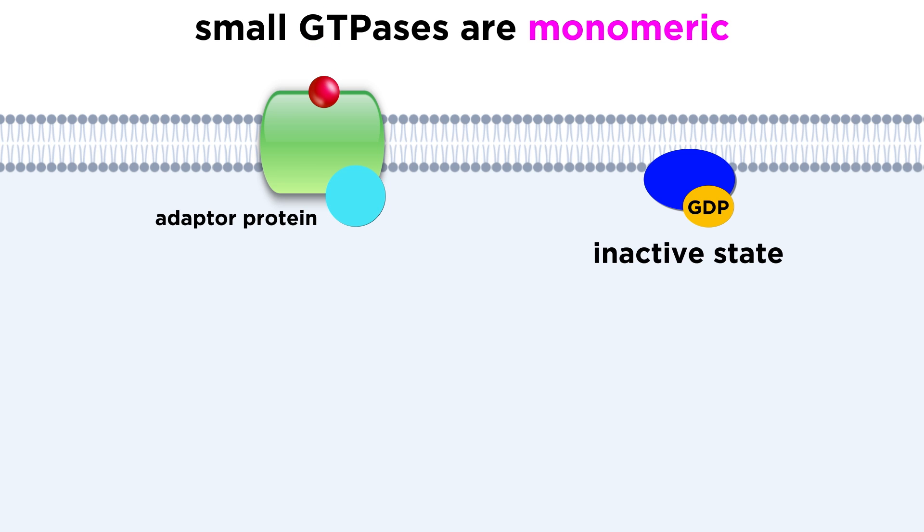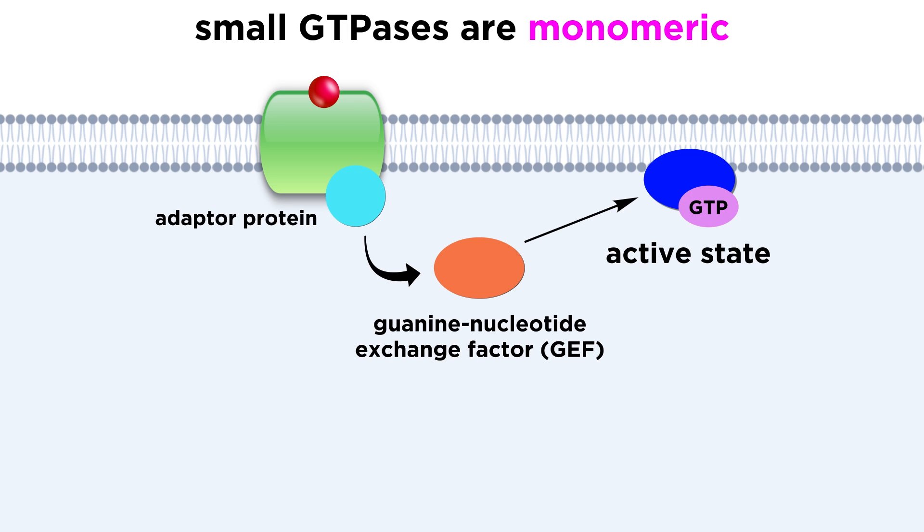When a receptor binds a ligand, adapter proteins localize to the cytoplasmic tail of the receptor, recruiting guanine nucleotide exchange factors, or GEFs, to swap out bound GDP for GTP, allowing the GTPase to become activated and launch a cell signaling cascade.